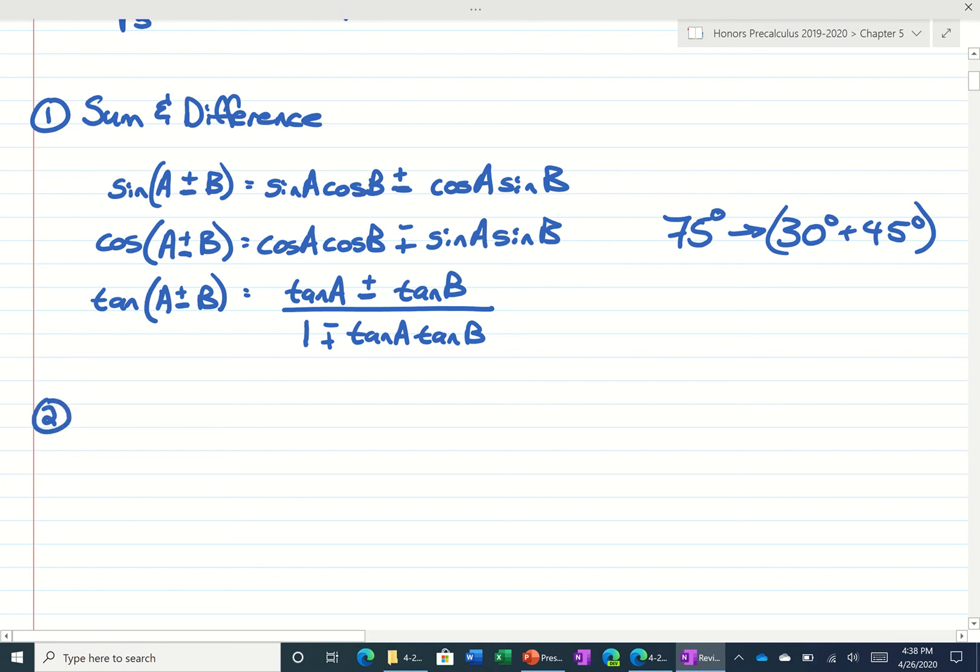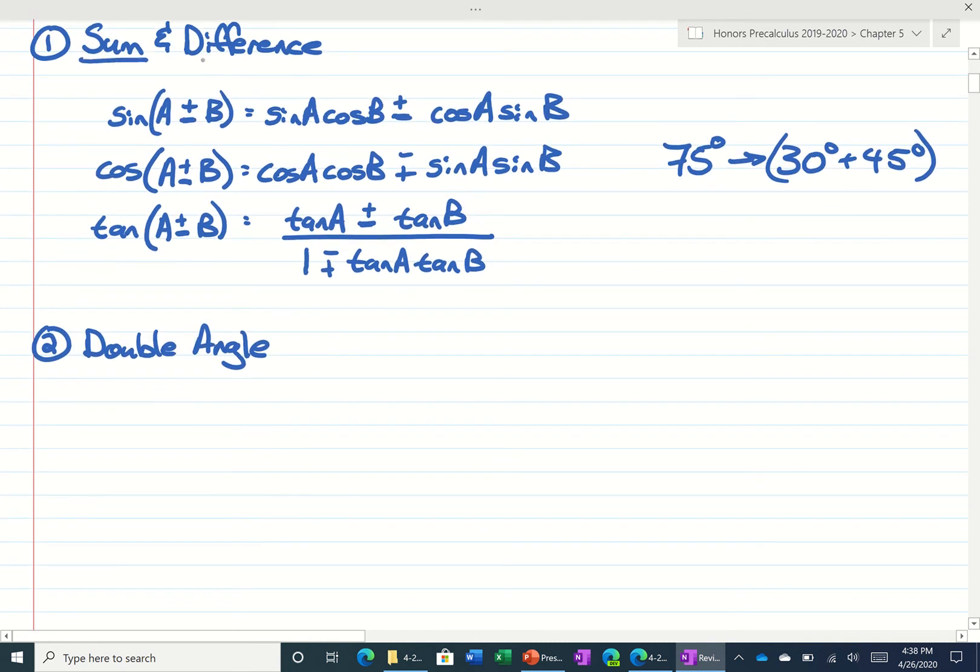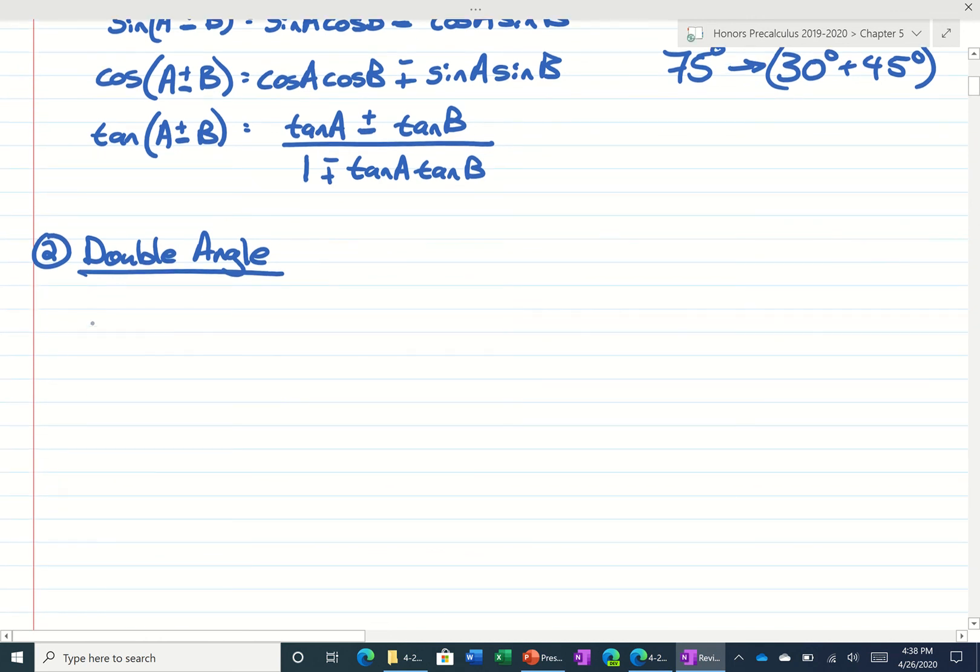Second kind of formula you'll need to know are your double angle formulas, and I showed you where these came from. Some of the videos also showed you where the double angle formulas came from. And we have the sine of a double angle was just 2 times the sine of x, cosine of x.